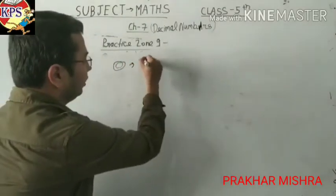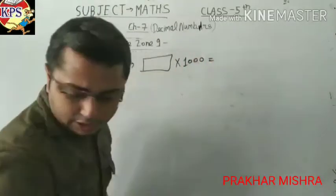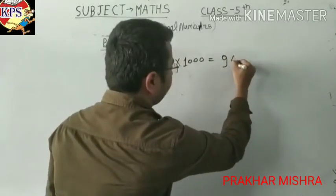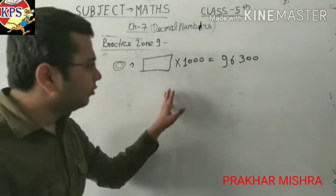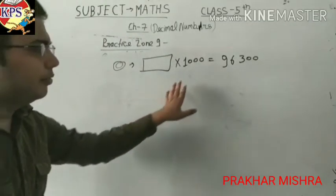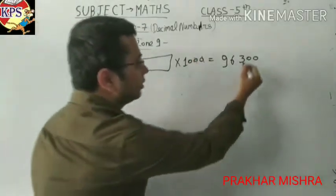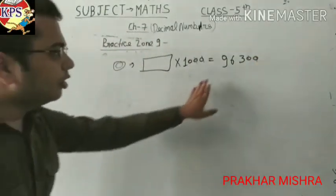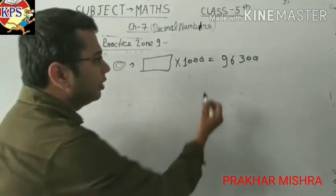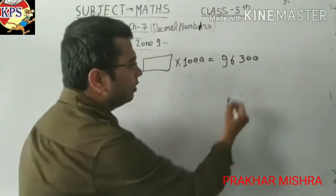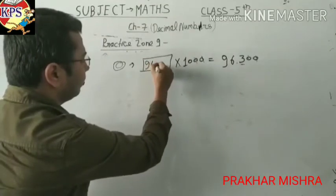In C number, you can see: one box into 1000 equals 96300 is given. We have to find the multiplier. First, cancel these two zeros from 96300 by the two zeros from 1000. What is left? 963 is left here and one zero is left there. Because one zero is left, we mention the point before one number. So our answer is 96.3.